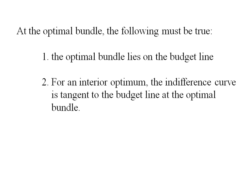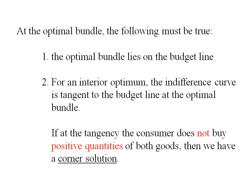At the optimal bundle, we know it's going to lie on the budget line. We also know that for an interior optimum, the indifference curve is tangent to the budget line at the optimal bundle. If the consumer does not buy positive quantities of both goods, we have a corner solution — meaning we buy all of one good and none of the other.